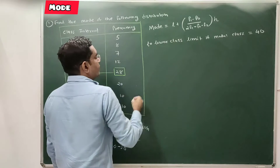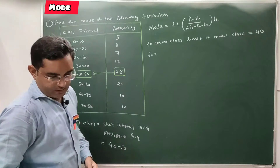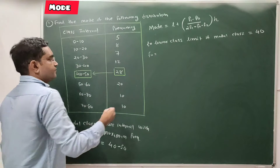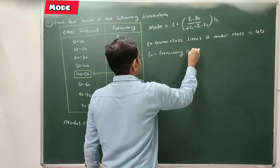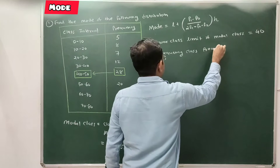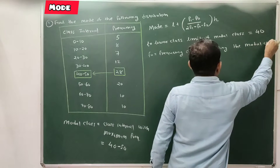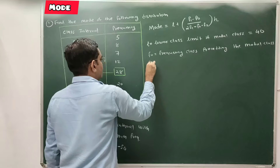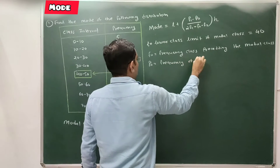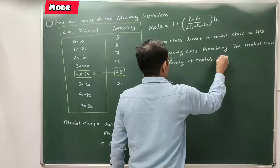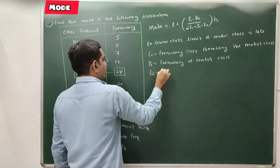Now we have to identify f0, f1, and f2. f0 is the frequency of the class preceding the modal class. f1 is the frequency of the modal class itself.